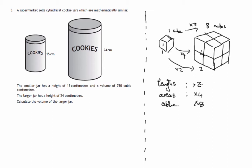So a length scale factor of 2, an area scale factor of 2 squared, and a volume scale factor of 2 cubed. So whatever the length scale factor is, you cube that to get the volume.